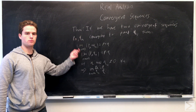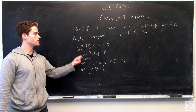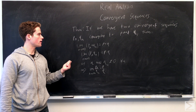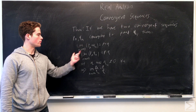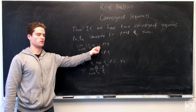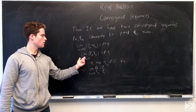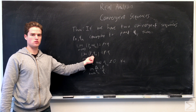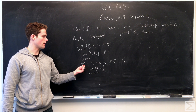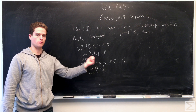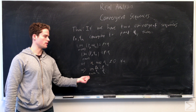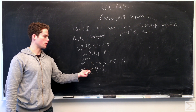Some basic properties of these sequences: if we have two sequences p_n and q_n converging to p and q respectively, we can prove the limit of the sum of the two sequences converges to the sum of the limits. We can prove the limit of the product of these two sequences equals the product of the limits. And if q and q_n are never zero for all positive integers n, then the limit of p_n over q_n equals p over q.